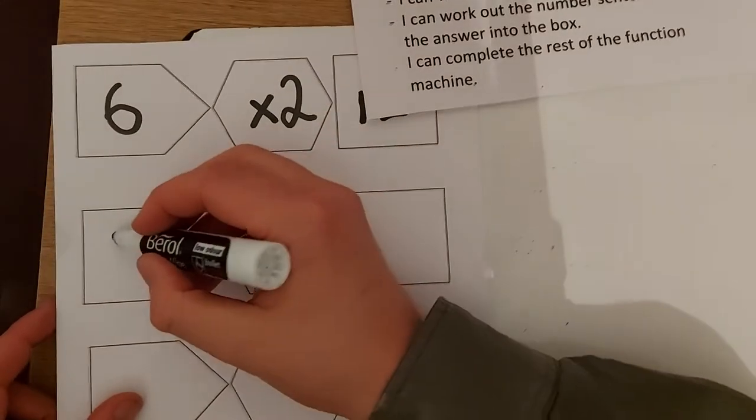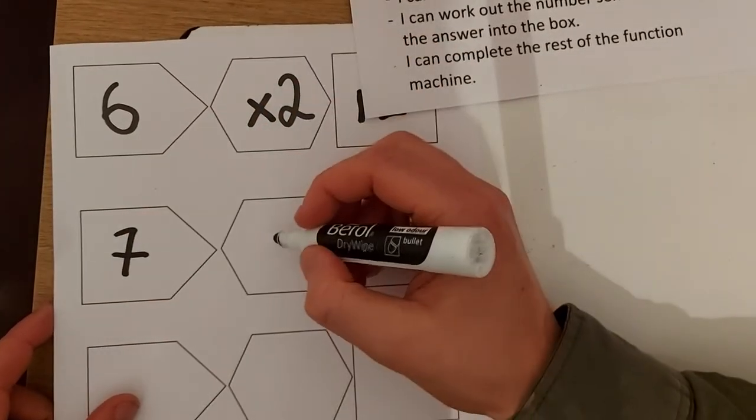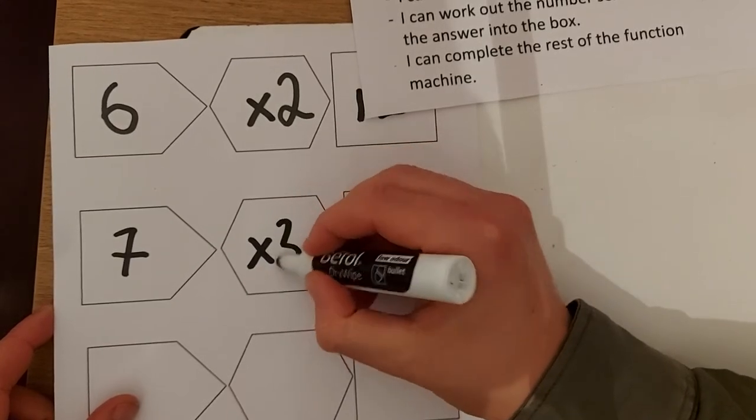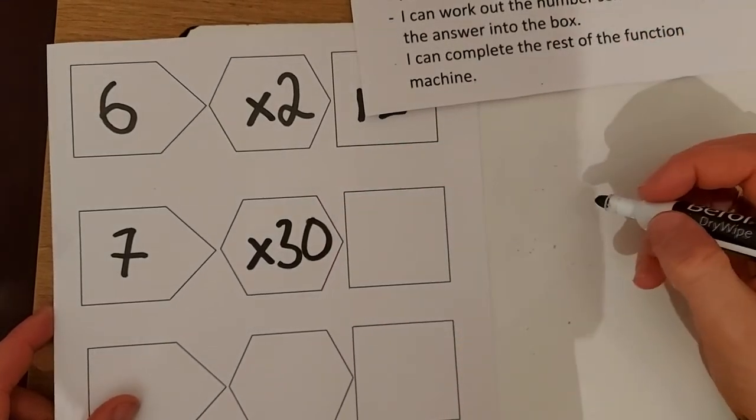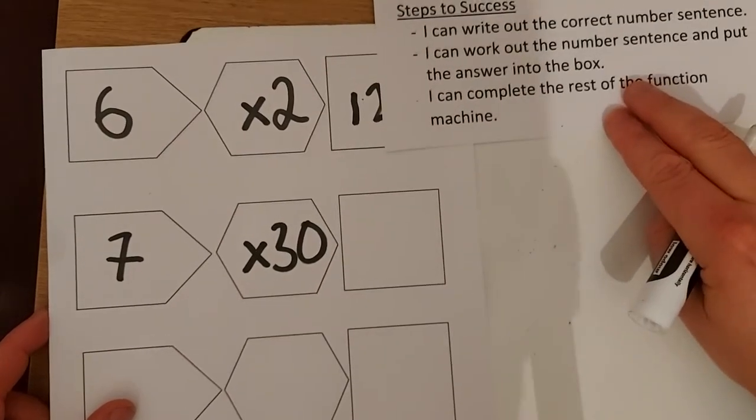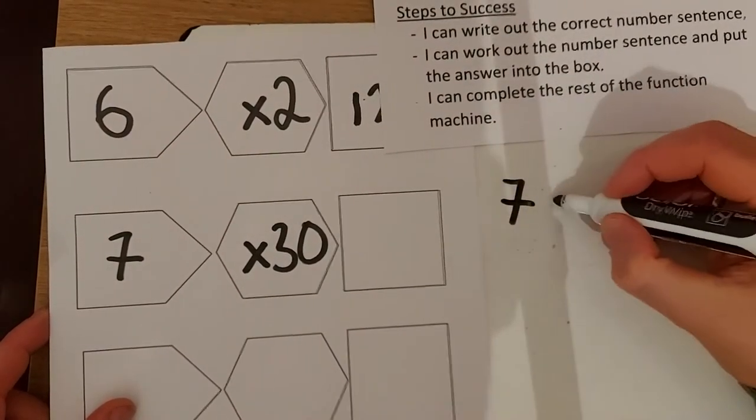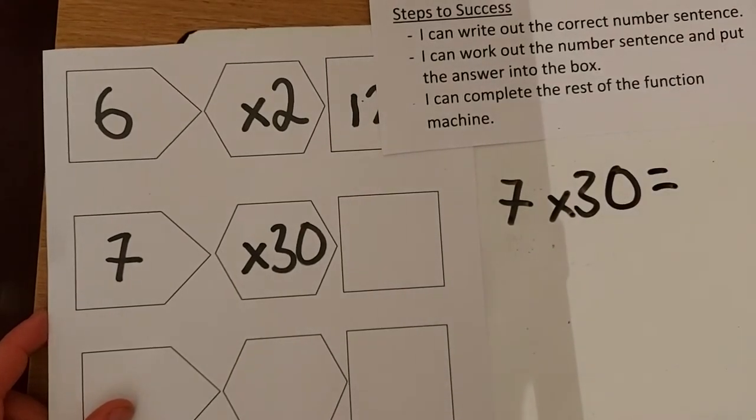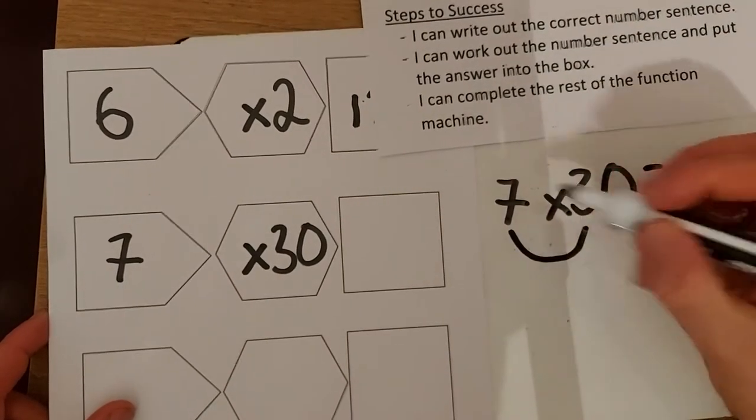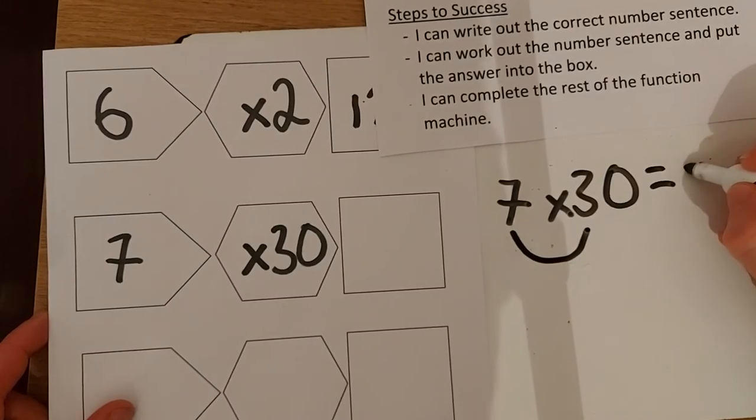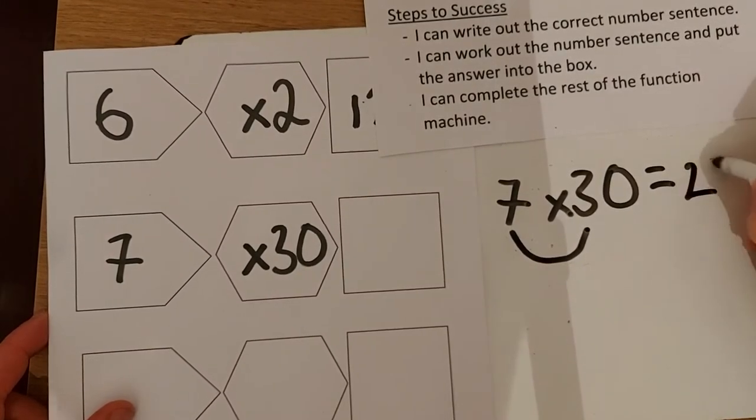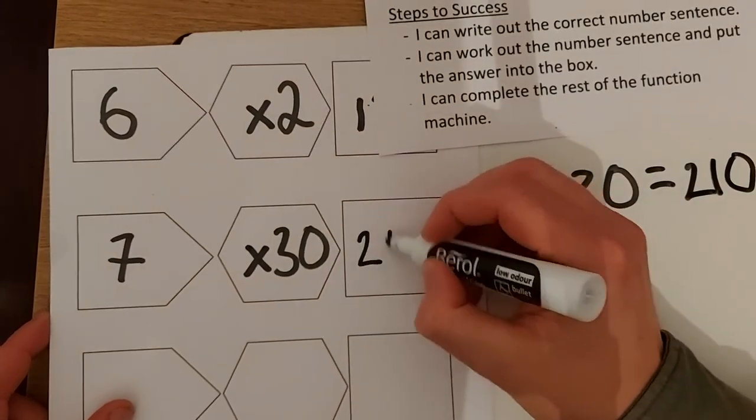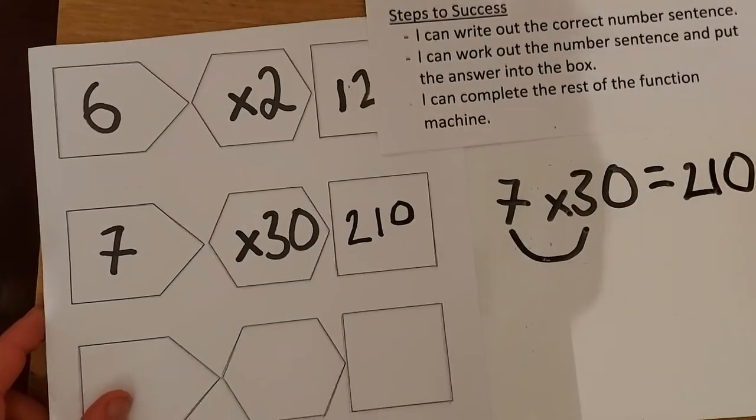Let's try a tricky one. Let's do 7 times 30. This is tricky because we've got a little bit of smile method. We might do 7 times 30 equals. I've written out the first step, then I need to work it out. It's a bit of smile method: 7 times 3 is 7, 14, 21, put the zero on, 210. The answer there would be 210.